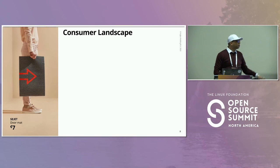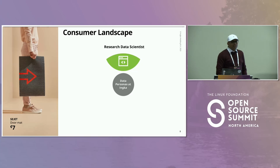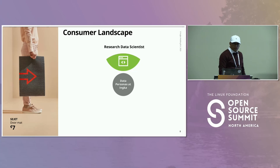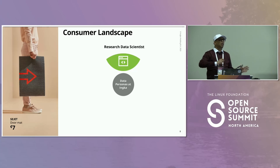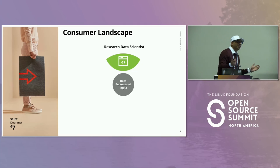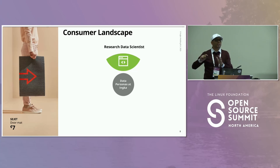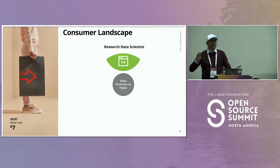Looking at our consumer landscape and personas: the first is the research data scientist. They work with academia — the latest models from MIT, the latest published papers, LLMs and so on. These are PhD-level, research-oriented people. They are code-first; they don't want an interface or experience layer. They just need high compute and the right packages to train and deploy models.